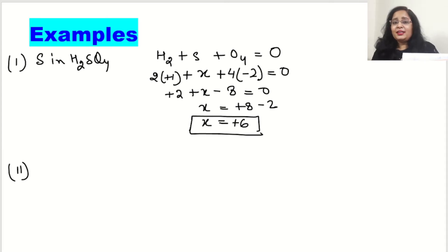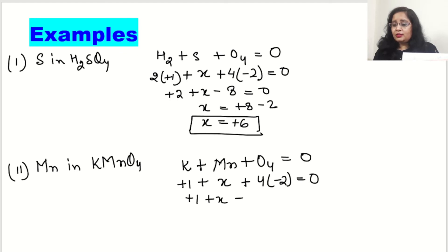One more example. Oxidation state of manganese in KMnO4. So here we have one atom of potassium, one manganese, plus 4 oxygen atoms, and the overall sum will be 0. So for potassium it is group 1, so oxidation state is plus 1. For manganese we will assume x. Oxygen, the oxidation state will be minus 2. 4 into minus 2 will be 0.